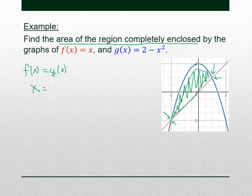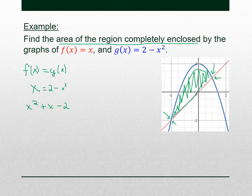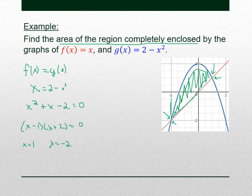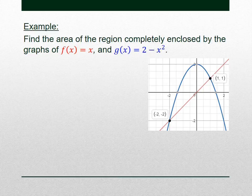Setting them equal: x = 2 − x². Rearranging: x² + x − 2 = 0. Factoring the quadratic: (x − 1)(x + 2) = 0, giving x = 1 and x = −2. That's exactly where the graphs intersected — at x = −2 on the left and x = 1 on the right. Those are our bounds of integration.